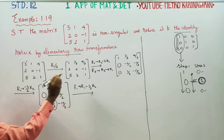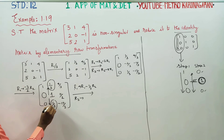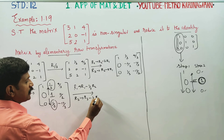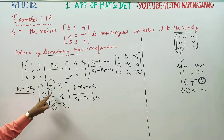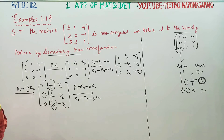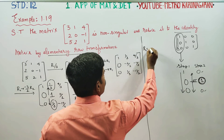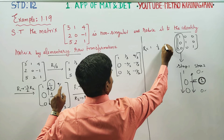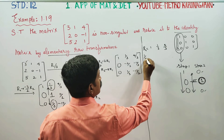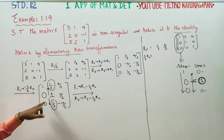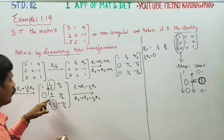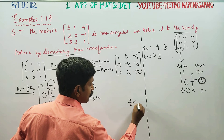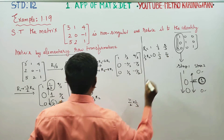For R1 update using 1/3 times R2: R1 is 1, 1/3, 4/3. Then 1/3 times R2 gives: 0 times 1/3 = 0; 1 times 1/3 = 1/3; 11/2 times 1/3 = 11/6. Now subtracting: 1 minus 0 = 1; 1/3 minus 1/3 = 0; 4/3 minus 11/6 — LCM is 6, 3 tables is 6, 2 times 4 = 8 minus 11.